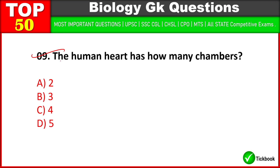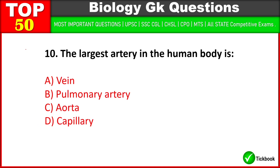The human heart has how many chambers? Option C — 4 is the right answer. The largest artery in the human body is the aorta — C is the right answer.